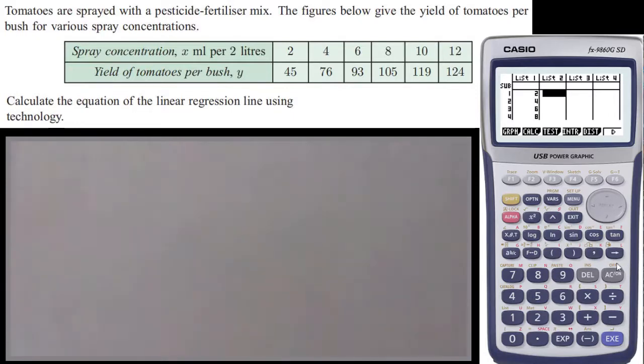And for the yield of tomatoes: 45, 76, 93, 105, 119, and 124. So we've got all those in.